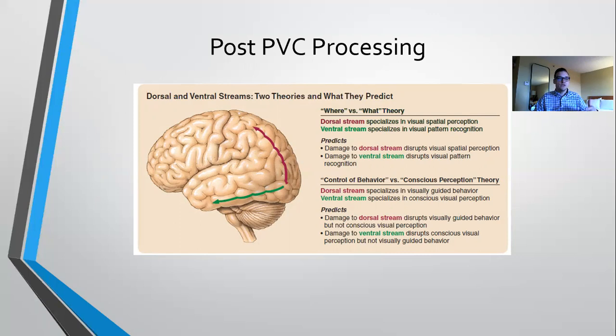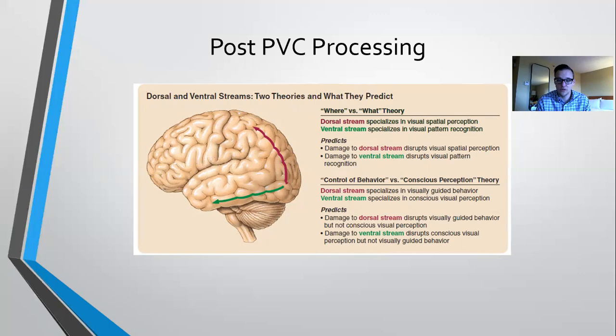But if you got hit closer to the top, damaging the dorsal pathway instead, you could still recognize things. You might recognize a zombie as a zombie, but because you can't visually reason where the zombie is relative to you, you might miss when you try to strike it. Either way, these two different pathways help us process different information about what is received visually.